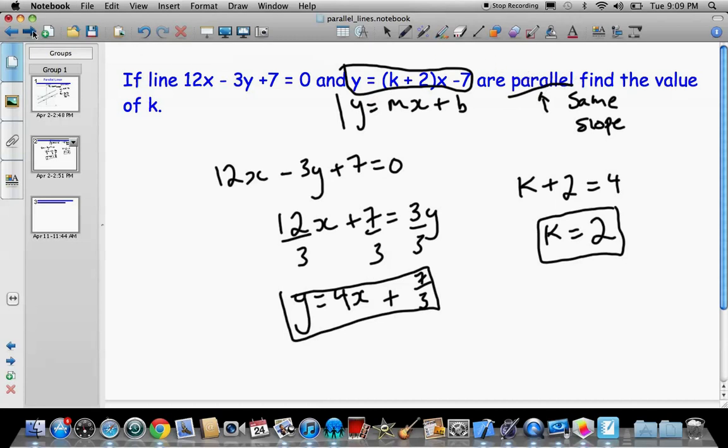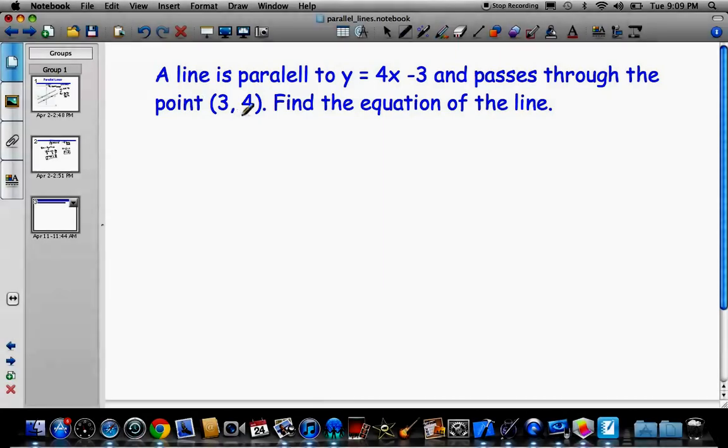All right, let's see if I have another example here. So a line is parallel to y equals 4x minus 3 and passes through the point (3, 4). Find the equation of the line.